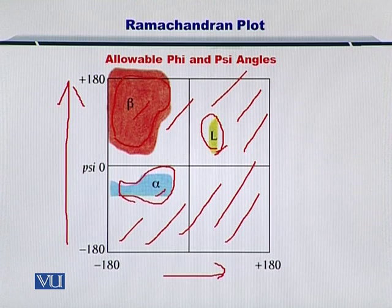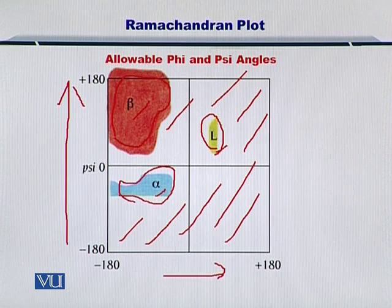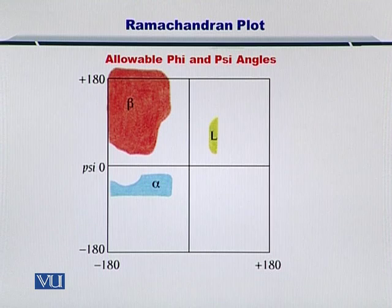This is very interesting because it means that nature selects specific Psi and Phi angles in order to fold proteins. This plot, discovered by Ramachandran et al., is therefore called the Ramachandran plot, and it is used to visualize how these angles are distributed for various secondary structures.